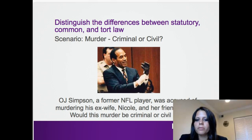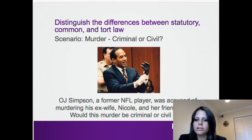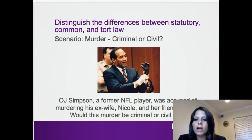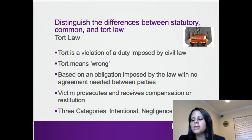I want to talk about the difference between criminal versus civil cases using OJ Simpson, a former NFL player accused of murdering his ex-wife Nicole and her friend Ronald. This would be both criminal and civil law. In the criminal case, the government was not able to prove beyond a reasonable doubt that he was guilty, so he was found innocent and did not face jail time. On a civil level, the families of the victims brought a suit against OJ Simpson for wrongful death. Because the burden was lower — just a preponderance of the evidence — they were able to prove at a civil level that he was liable, and they received over $40 million for the victims. You can have two different outcomes for the same problem depending on whether it's criminal or civil.